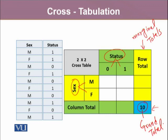We already know that in our data we have six males and four females. On the other hand, we have four with status zero and six who have status one.